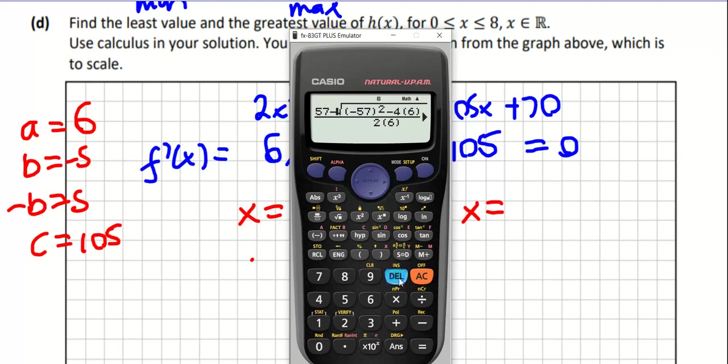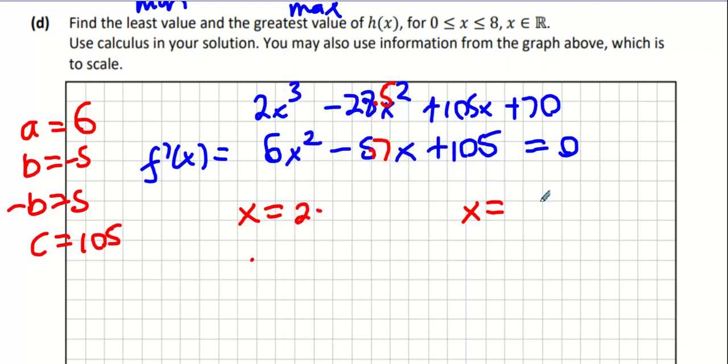So 2.5 and 7. Sorry about that. Now I have a bit of a cheat code for this. We're going to put the 2.5 and the 7 back into the original formula to find out what the max and the min are respectively.